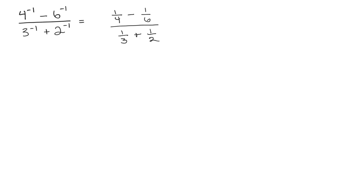The easiest method here is to multiply both the numerator and denominator of the entire complex fraction by the least common multiple. When you do that, all of the fractions in the numerator and denominator will be eliminated. We look at all the denominators: there's a four, a six, a three, and a two, and we need to find a common multiple of all of them.